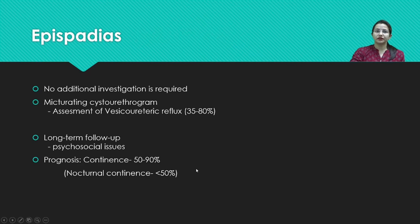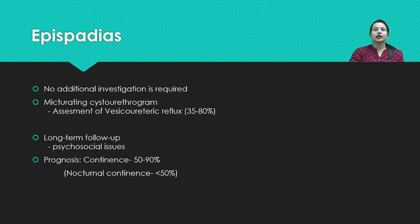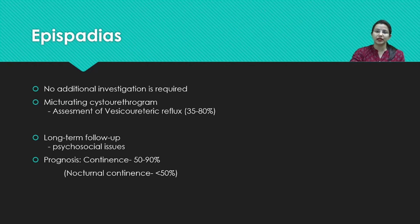Retrosymphysial epispadias — those behind the pubic symphysis — have a propensity for associated incontinence. No additional investigations are usually required; it is purely a clinical diagnosis. However, epispadias has been associated with vesicoureteric reflux in around 35 to 80 percent of patients, so a micturating cystourethrogram (MCU) can be ordered to look for associated vesicoureteric reflux.